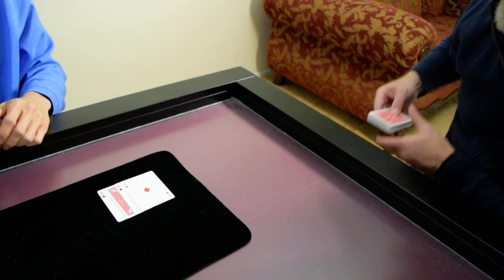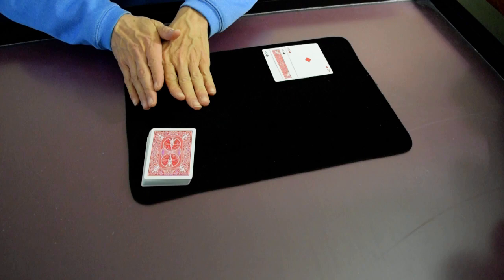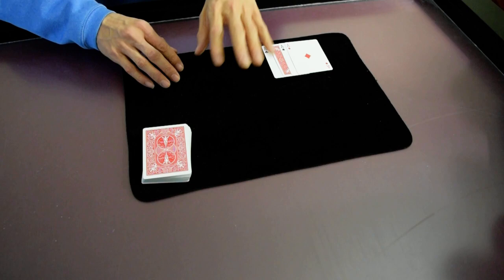Okay, so now, what suit is missing here? Hearts. Hearts, okay, so let's see if, now basically you've marked a point in the deck, and let's see if the suit that you marked, did that match the suit that's missing.